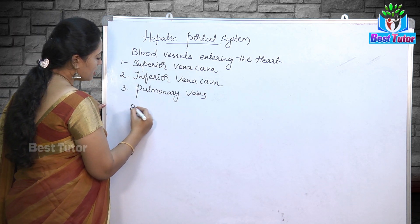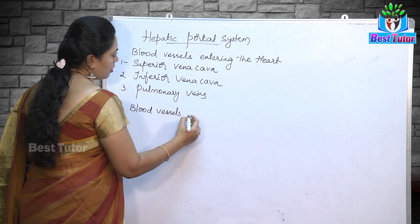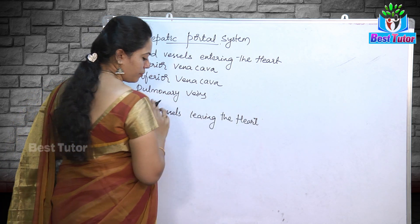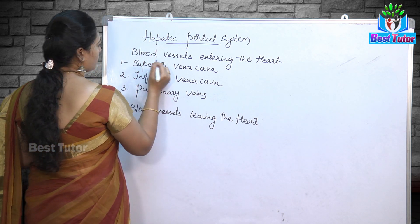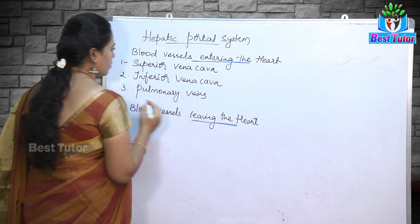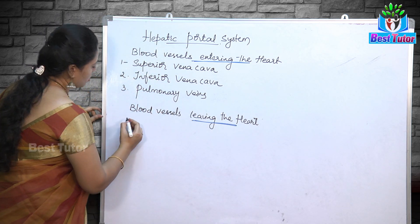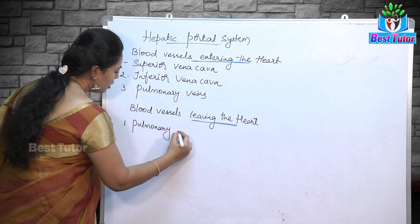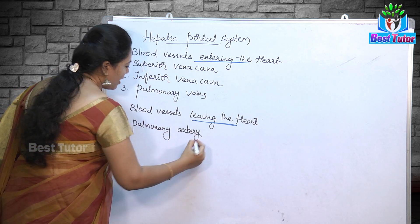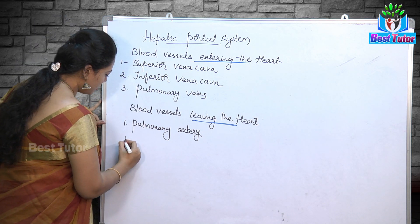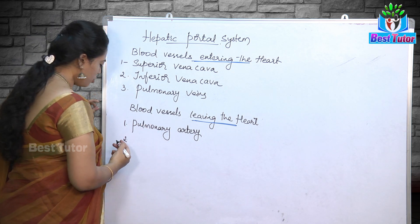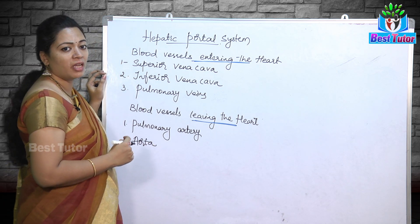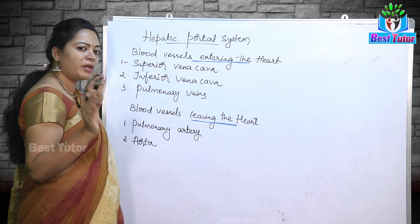Next, blood vessels leaving the heart. As you all know, one is pulmonary artery, which arises in the right ventricle going towards the lungs for the exchange of gases or purification of blood. Then, the aorta, which arises from the left ventricle, moving towards the different parts of our body.